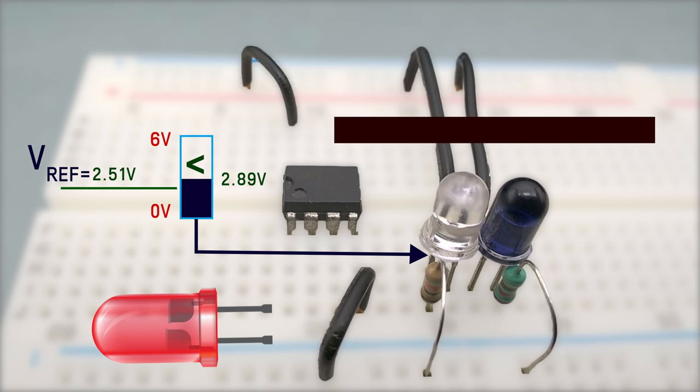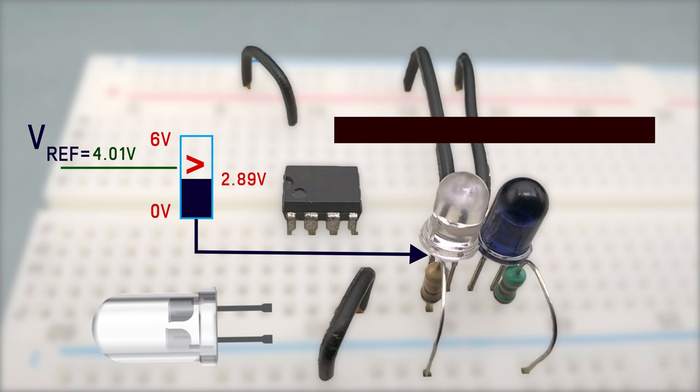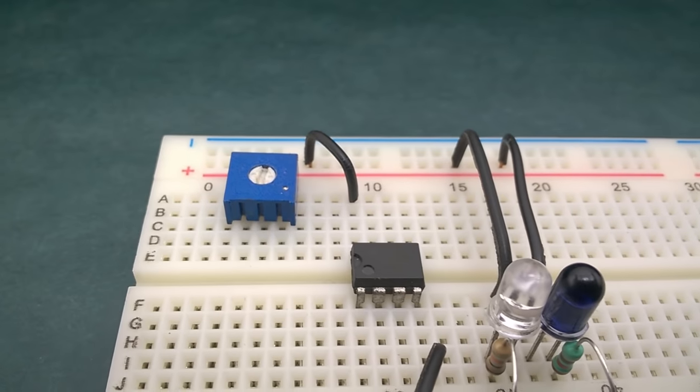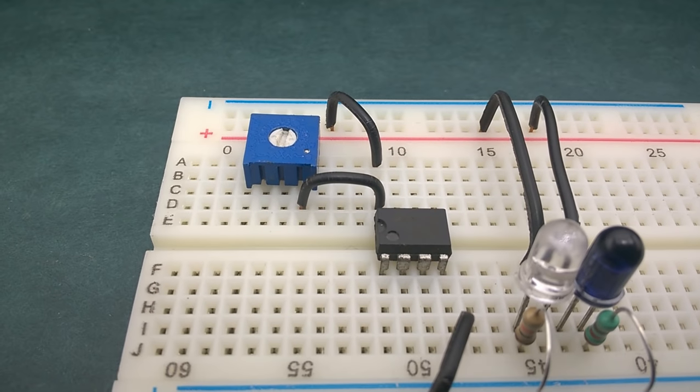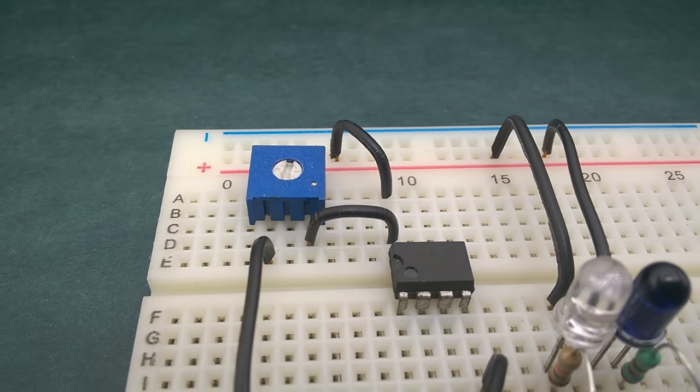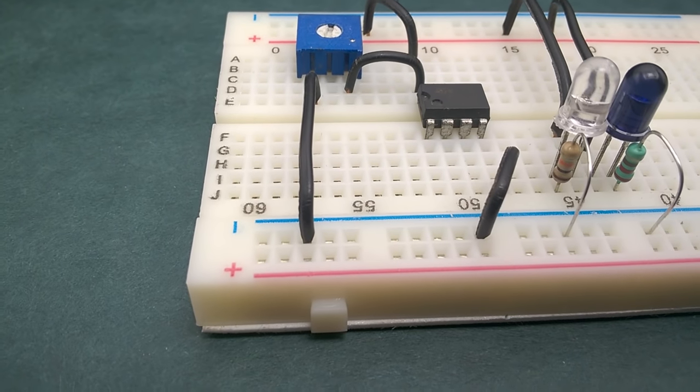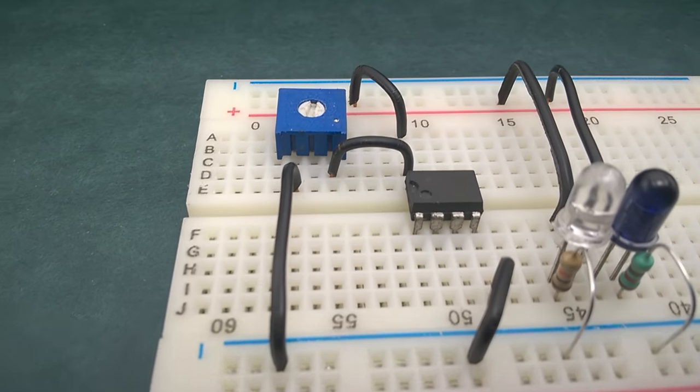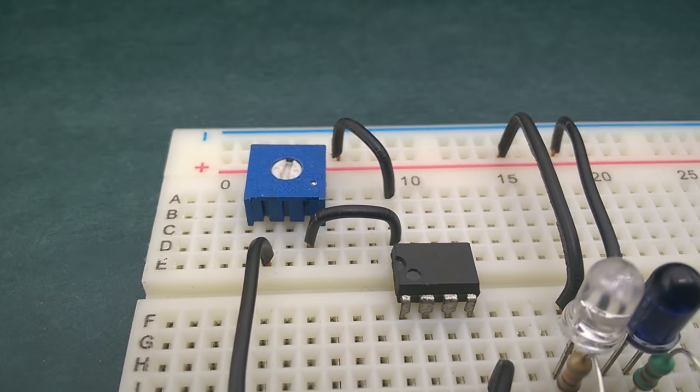How do we provide a reference voltage that is adjustable? The best way is to use a potentiometer, so place it on the breadboard and connect one of its extreme terminals to the positive rail and the other extreme terminal to the negative rail. Now the voltage at the center terminal can be adjusted by turning the knob.